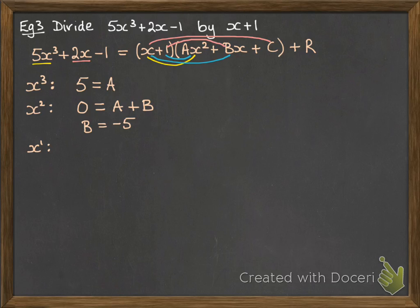Comparing the x terms in a similar way, we've got 2 on the left. And from the right, we can get the b and the c. So c must be 7, since we know that b is minus 5.